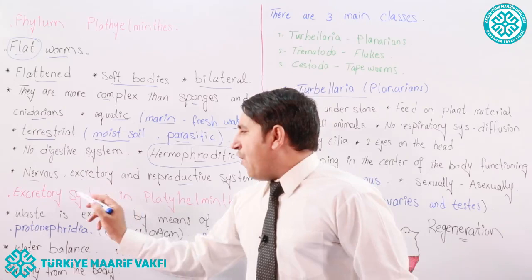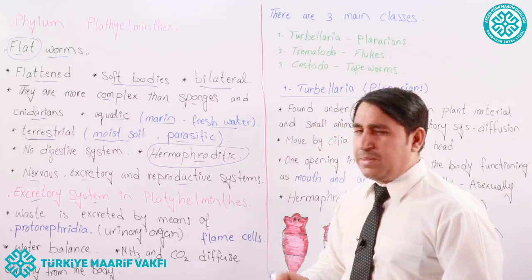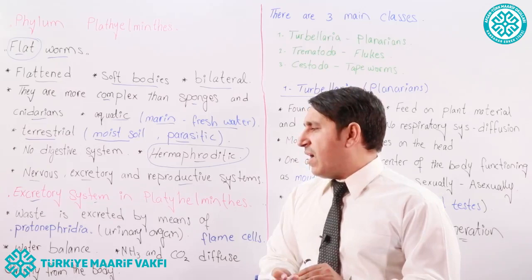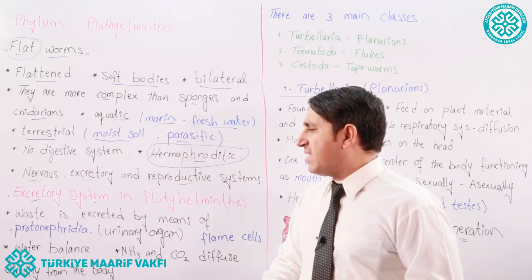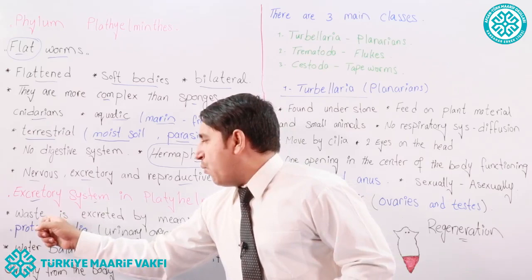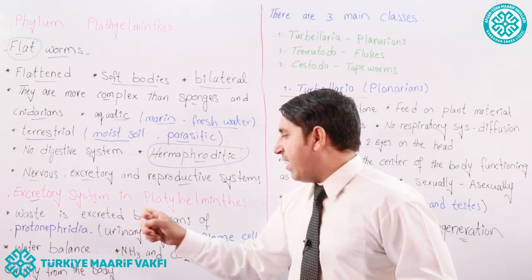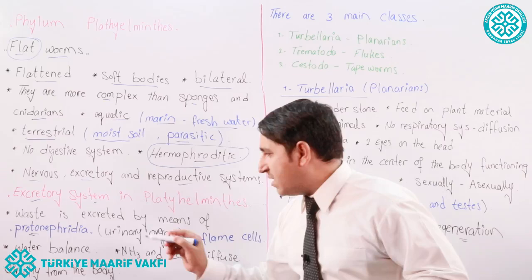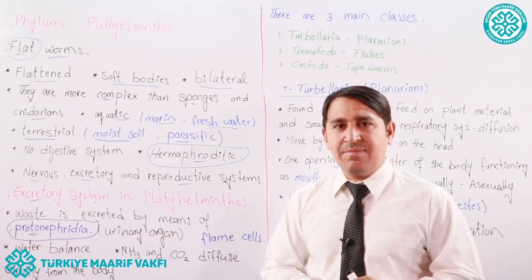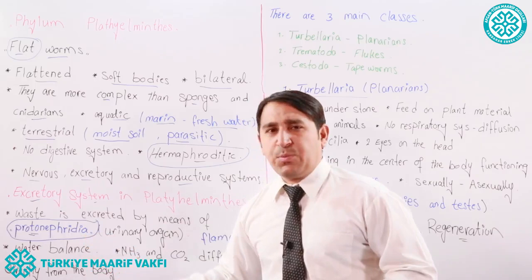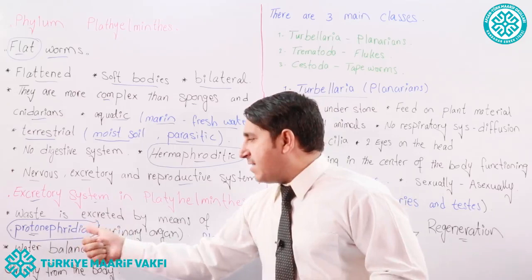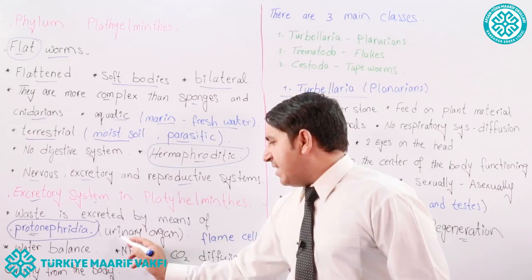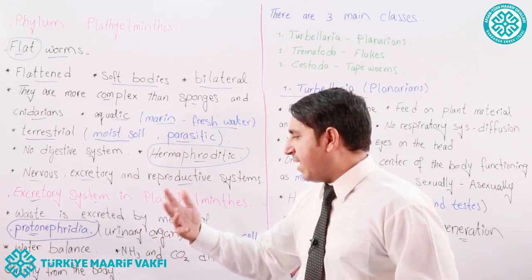Now we come to the excretory system in Platyhelminthes. In the excretory system, the living organism removes waste products from its body. Platyhelminthes also have this system, and it removes waste products. The waste is removed by means of some structures in their body, and these structures are called proto-nephridia. Proto-nephridia are some cells whose function is to remove waste products from the body of flatworms.